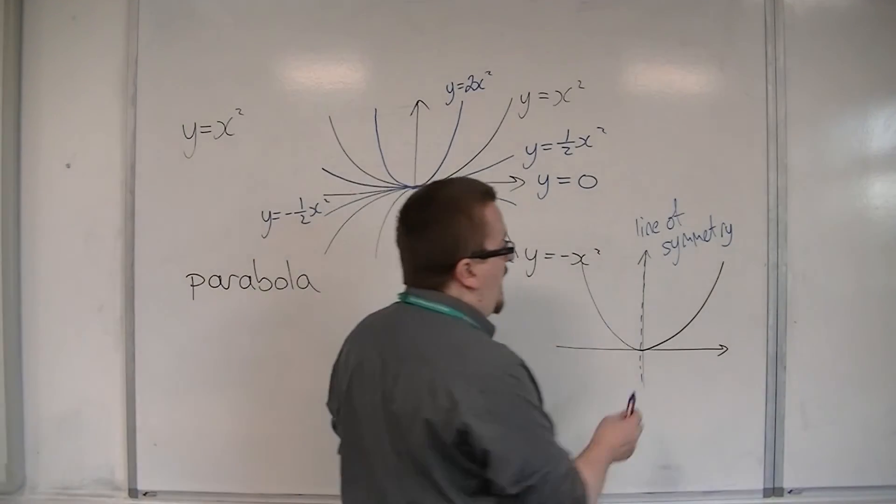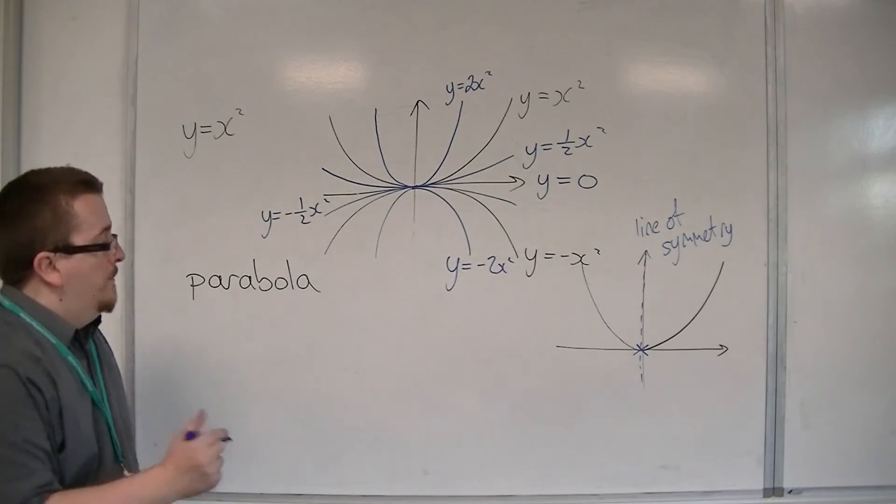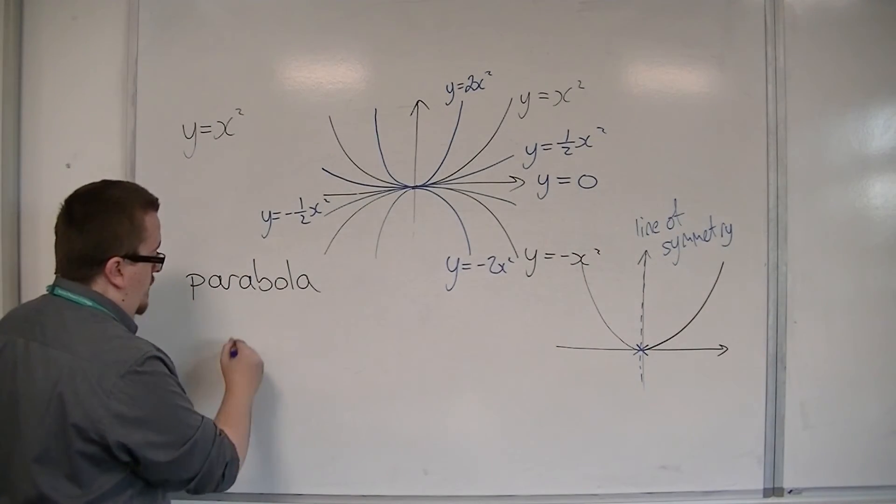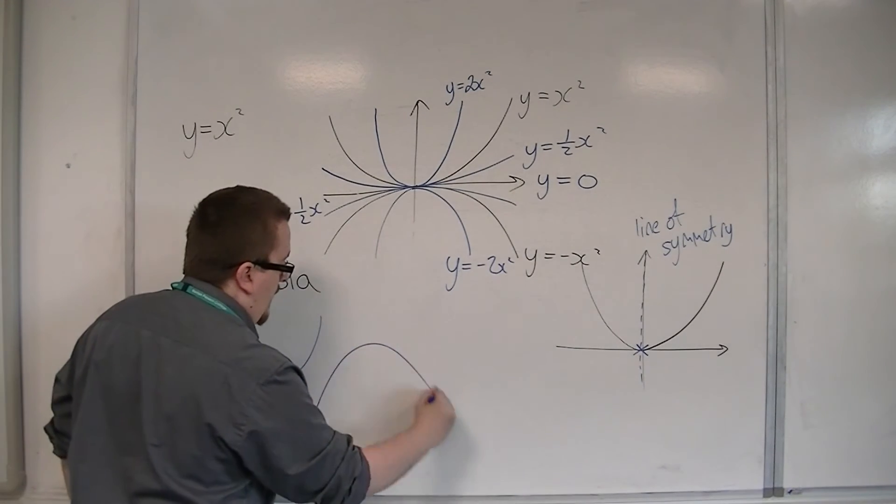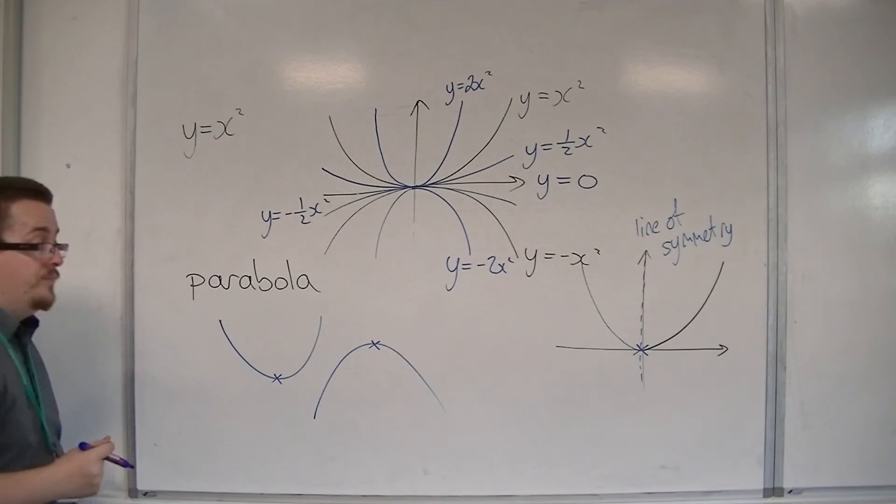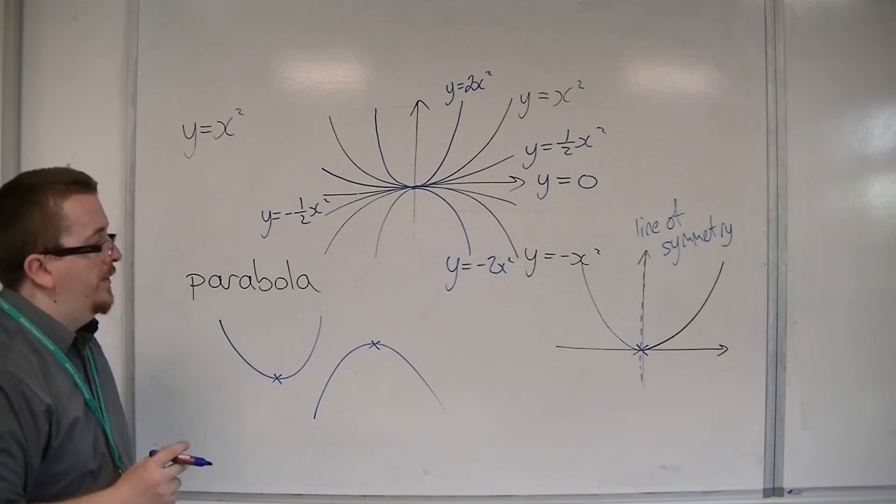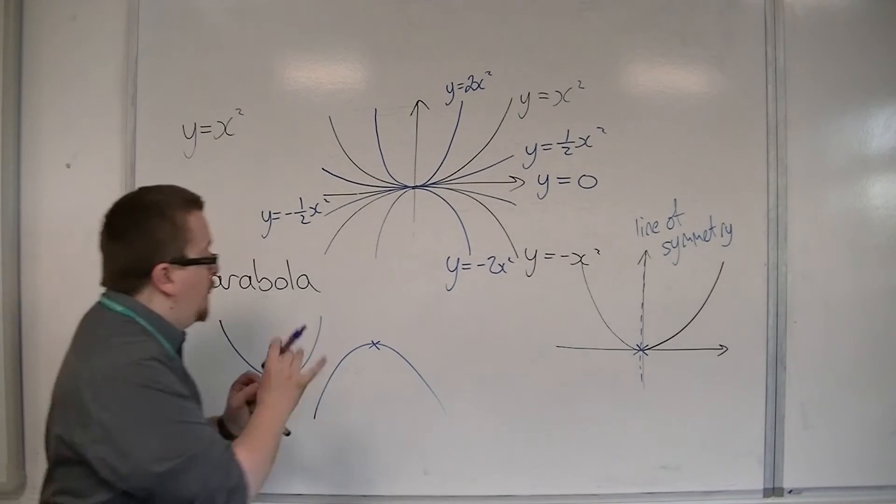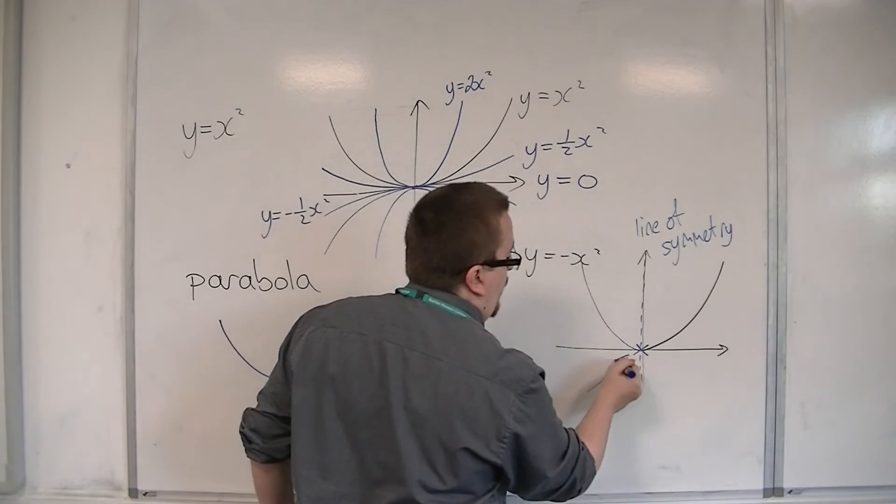You'll also notice that it has this point here. For curves that are like this, there is that point, and then like this, there is that point. These are known as turning points or stationary points. And as for the specific point of a quadratic, it is known as the vertex.